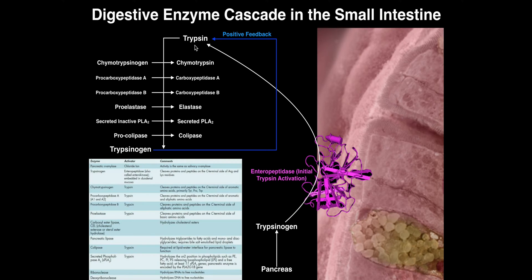Trypsin, even though it's not the first active enzyme — really enteropeptidase is — trypsin is the enzyme that's going to activate all of these other small intestine serine proteases. Trypsin is going to activate chymotrypsinogen into chymotrypsin. Trypsin is going to activate procarboxypeptidase A into carboxypeptidase A. And by the way, if you see this written as procarboxypolypeptidase A, that's the same thing — sometimes they'll put the poly in there, sometimes they won't.